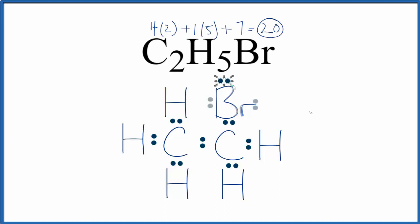So let's do the bromine. At this point, we've used all 20 valence electrons. The bromine has eight, that's an octet. The carbons, each carbon has eight, an octet, and then each hydrogen has two, and that's all it needs. So this is the Lewis structure for C2H5Br, bromoethane.